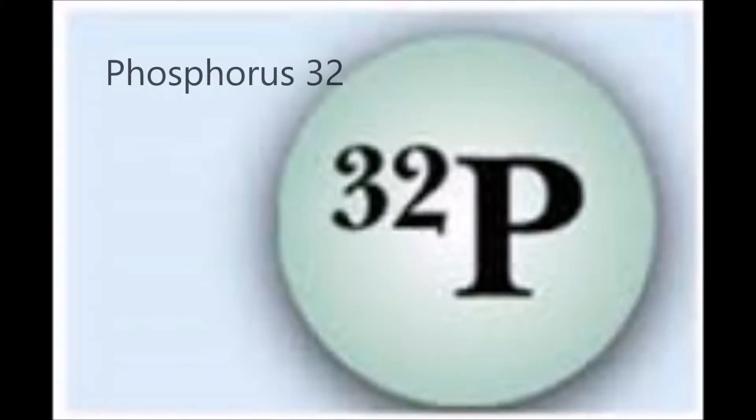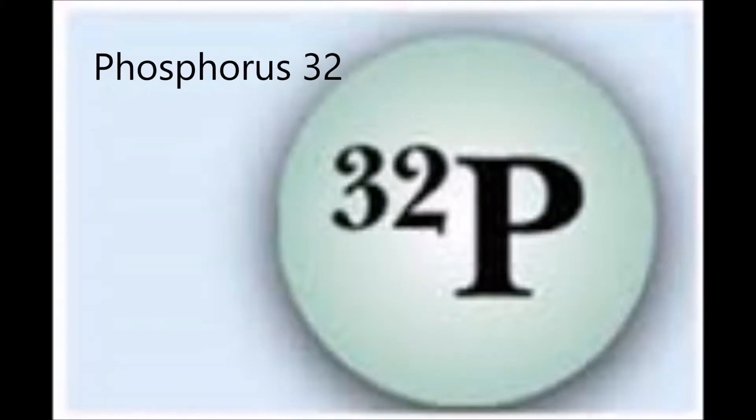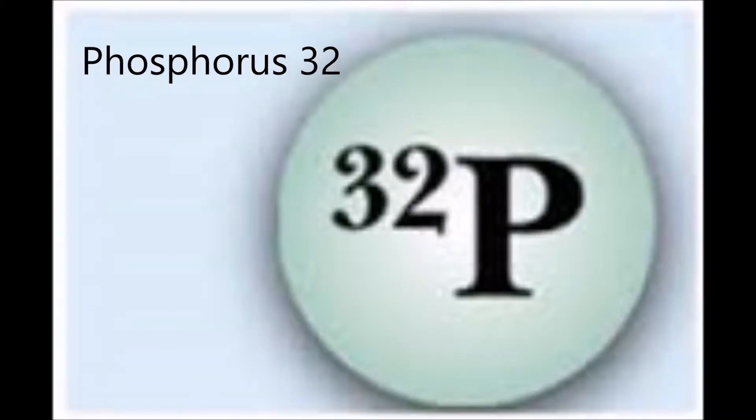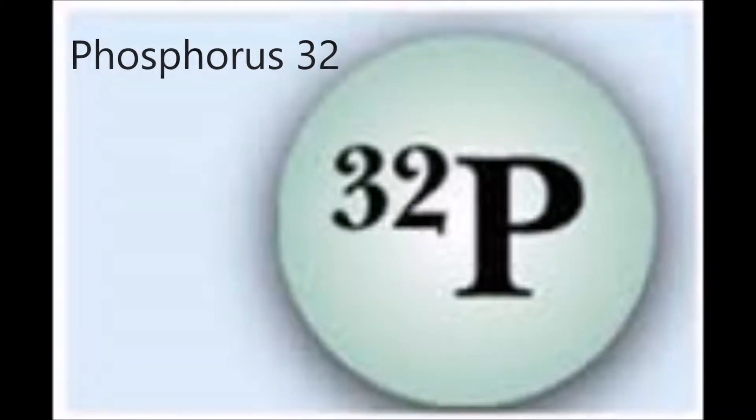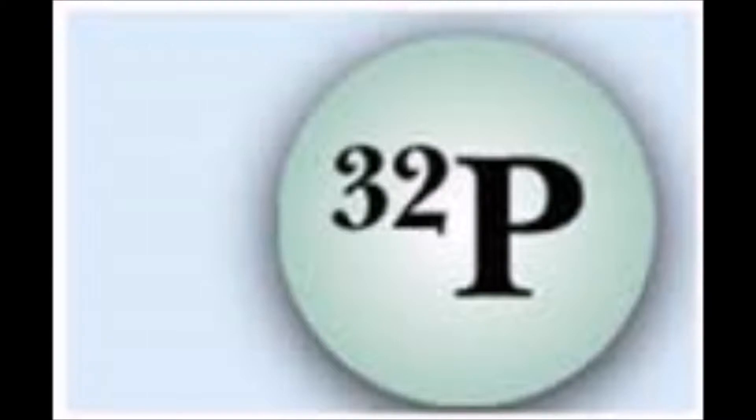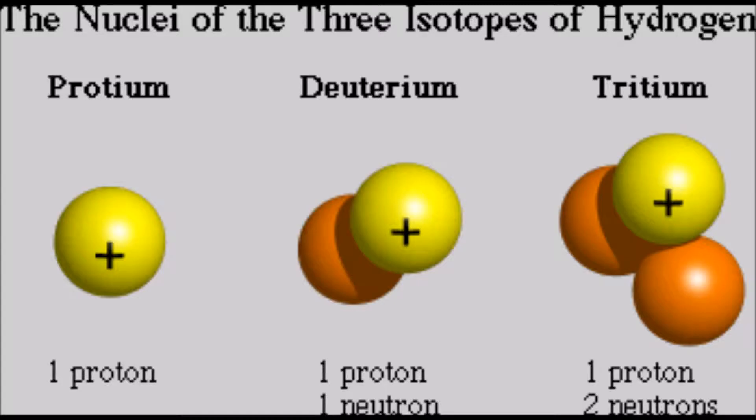Phosphorus-32 is a radioisotope of phosphorus and is used in the area of medicine. Before we begin, we must ask what an isotope is.